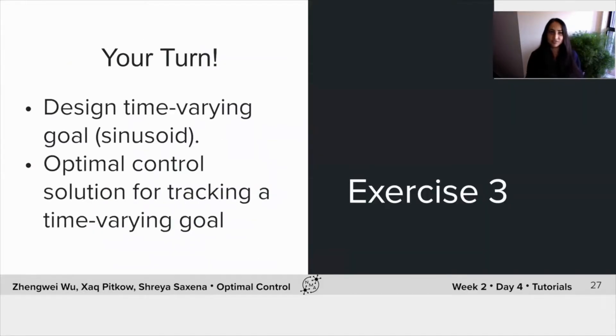So I basically want you in this next exercise to design this time varying goal, in this case, the sinusoid, but feel free to play around with other time varying goals. And really visualize the optimal control solution for tracking this goal and play around with the parameters again to see exactly what effect that has. Great, have fun with this. Thank you very much.